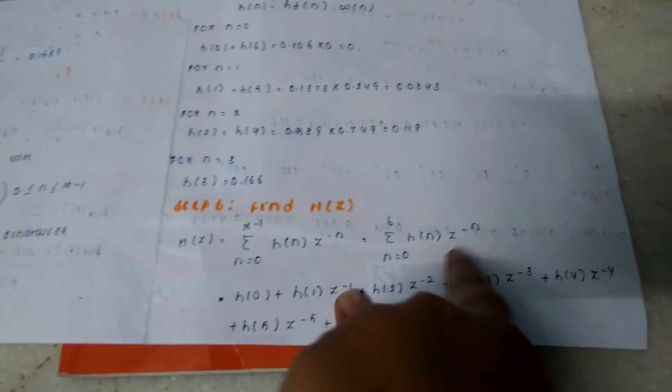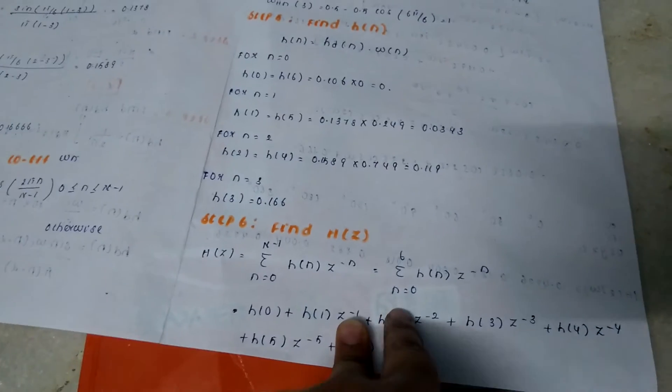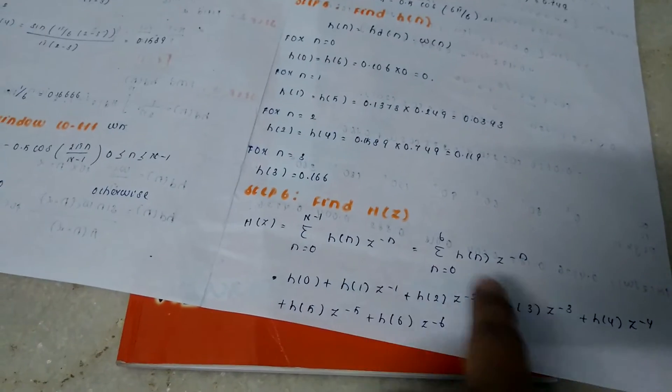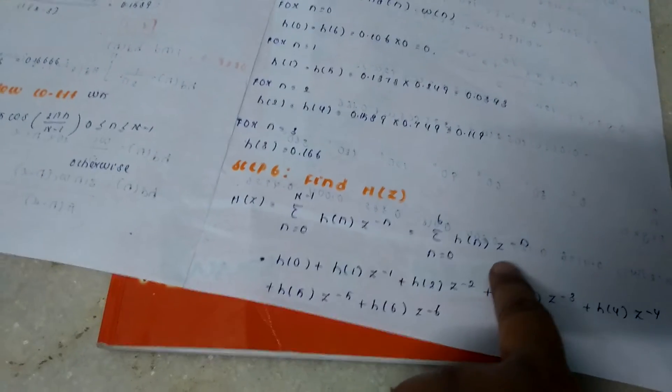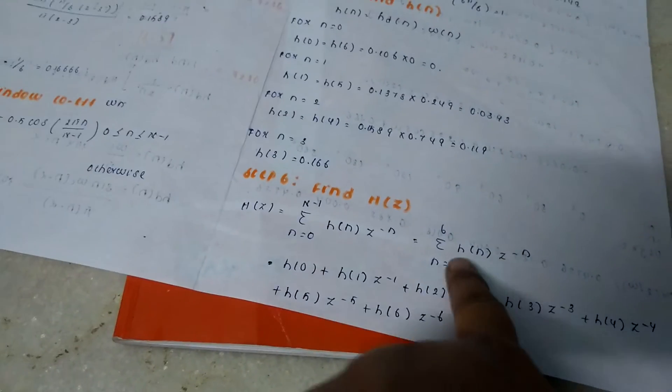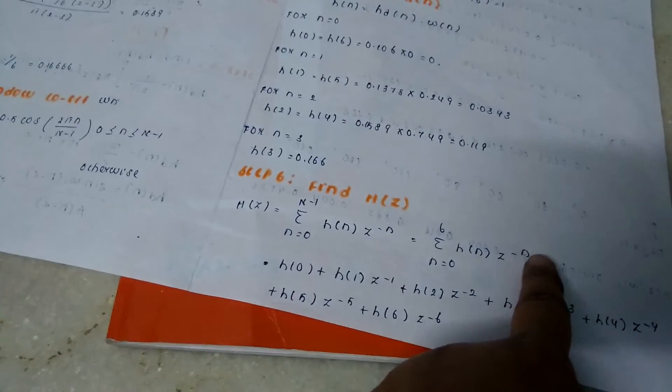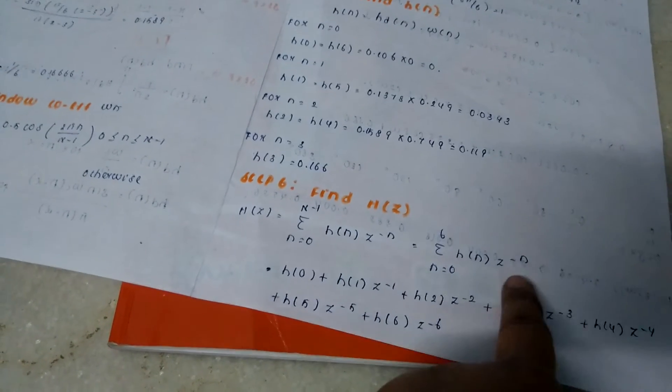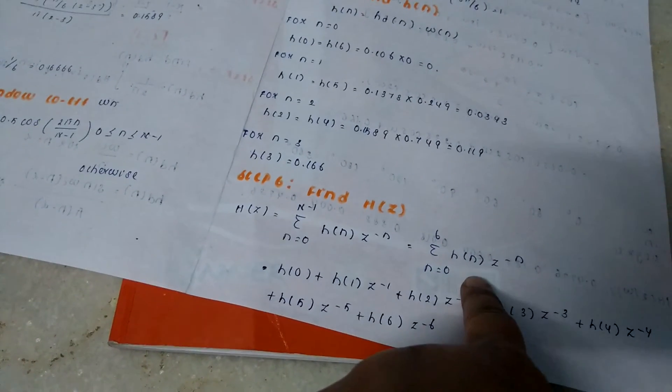Then at the next step, expand from 0 to 6: h(0)z^0 + h(1)z^(-1) + h(2)z^(-2) + h(3)z^(-3) + h(4)z^(-4) + h(5)z^(-5) + h(6)z^(-6).